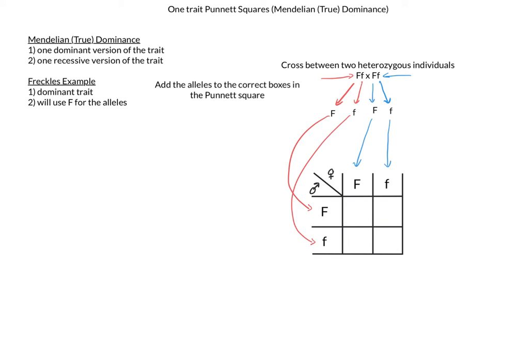At this point, I am now ready to solve it, and I simply multiply the alleles against each other. So top left will be big F, big F. Top right will be big F, little f. Bottom left will be big F, little f. And bottom right will be little f, little f.